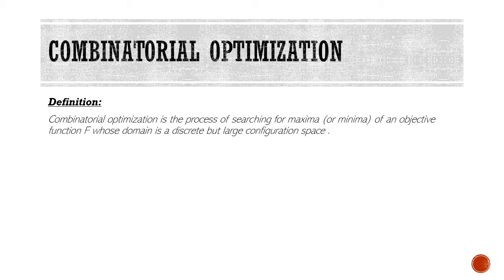Let's start with an overview of combinatorial optimization. By definition, combinatorial optimization is a process of searching maxima or minima of an objective function f whose domain is a discrete but large configuration space.